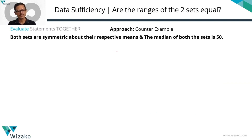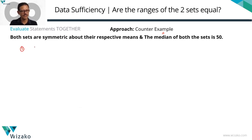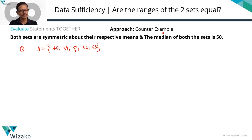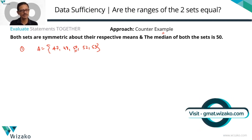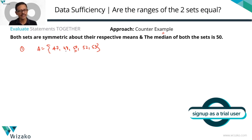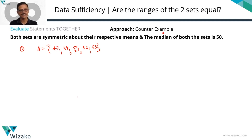Combining both statements: both sets are symmetric about their respective means, and the median of both sets is 50. Looking for a yes example first. Set A: 47, 48, 50, 52, 53. Five numbers. Spacing them equally on left and right of 50: gaps of 1 and 2 on each side — symmetric about the mean. The mean equals 50 (verify: 47+53=100, 48+52=100, total 250 ÷ 5 = 50). Median is 50. Range equals 6.